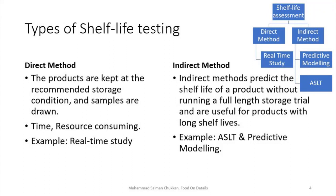In the indirect method, shelf life is predicted without a full-length storage trial, making it very useful for products with a long shelf life. The indirect method can be classified into two approaches: accelerated shelf life testing (ASLT) and predictive modeling.